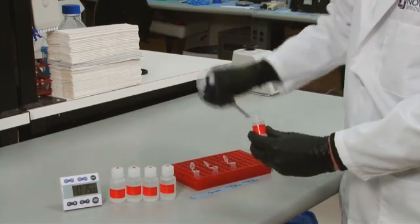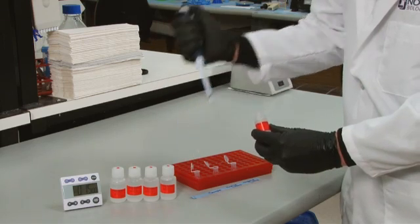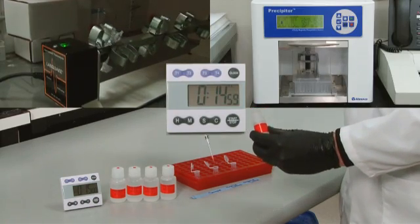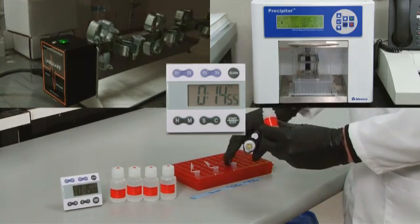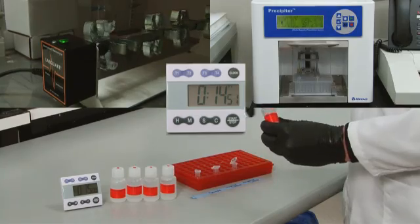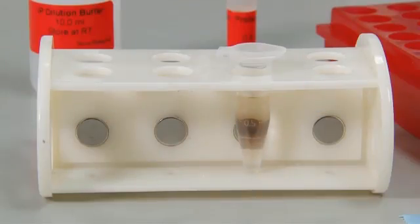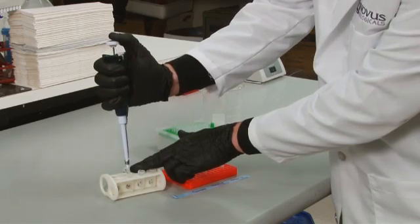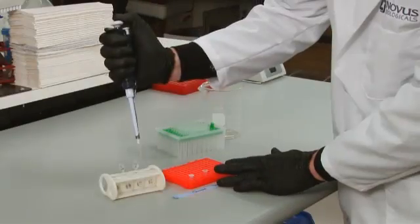Elute the complex from the beads by adding 200 microliters of IP dilution buffer and washing for 15 minutes at 4 degrees Celsius with rotation or agitation. Pellet the beads, keeping the supernatant and discarding the beads.